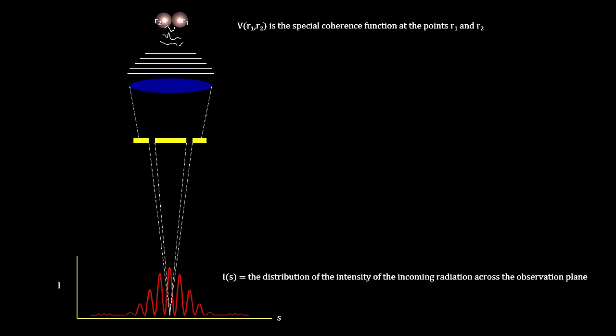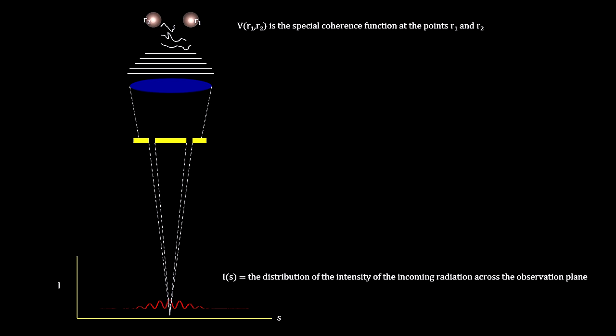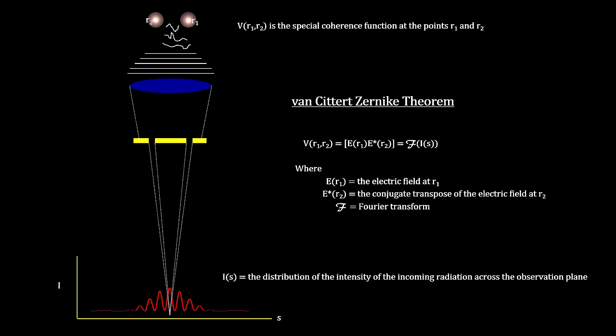See how the amount the image fades is greater the further apart the two stars are. The math involved was developed independently by Dutch physicist P.H. Van Cittert in 1934 and F. Zernike in 1939. It's known as the Van Cittert–Zernike theorem.